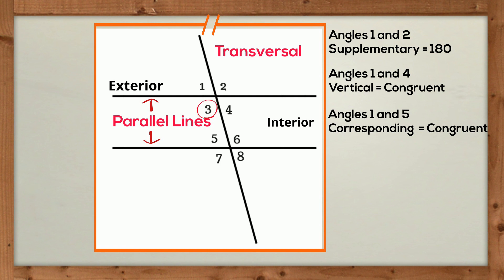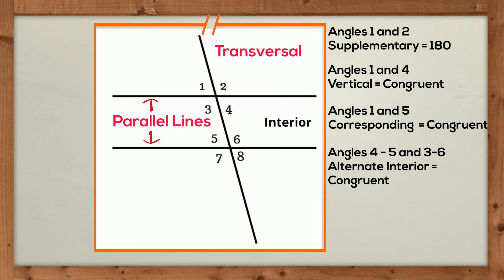If you look at angles 3 and 6, and 4 and 5, these are called alternate interior angles, and they also have congruent angle measures.